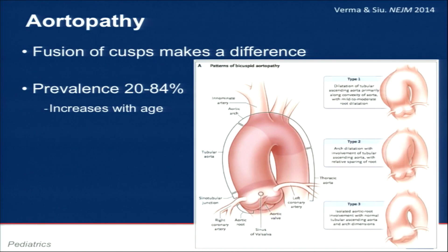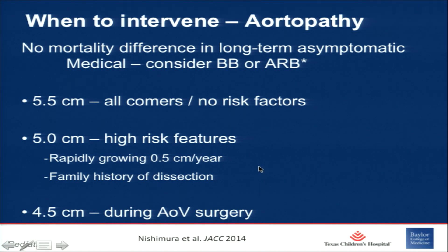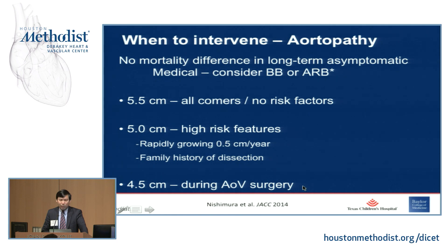As an aortopathy, a 2014 New England Journal article by Verma and Siu shows root and ascending aorta dilation occurs in at least half of patients. For medical therapy, beta blockers and angiotensin receptor blockers have been studied in the BAV trial. Surgical thresholds are 5.5 cm for all comers; 5.0 cm if there are high-risk factors such as rapid growth over 0.5 cm per year or a family history of dissection or rupture; and 4.5 cm if concomitant valve surgery is planned.